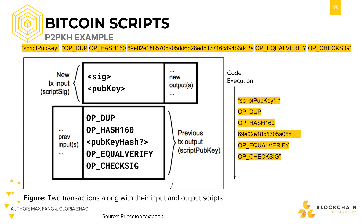To make unlocking and locking scripts work in tandem, we simply concatenate them. We put the unlocking script on top of the locking script — script-sig on top of script-pubkey — and then run them together. The entire resulting script must execute successfully in order for the transaction to be considered valid.